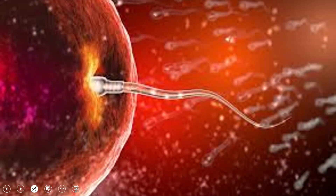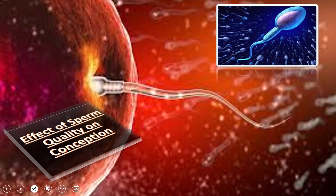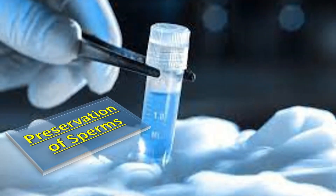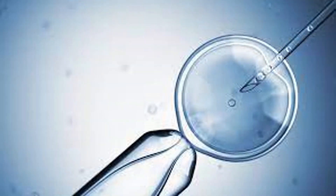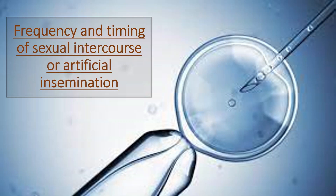Sperm quality affects conception. The NICE guideline states that people using artificial insemination should be informed that using fresh sperms is associated with higher conception rates than frozen-thawed sperms. Sperm preservation is especially indicated in patients with Hodgkin lymphoma. Regarding frequency and timing of intercourse, vaginal sexual intercourse every second to third day optimizes the chance of pregnancy, and those using artificial insemination should have insemination timed around ovulation.